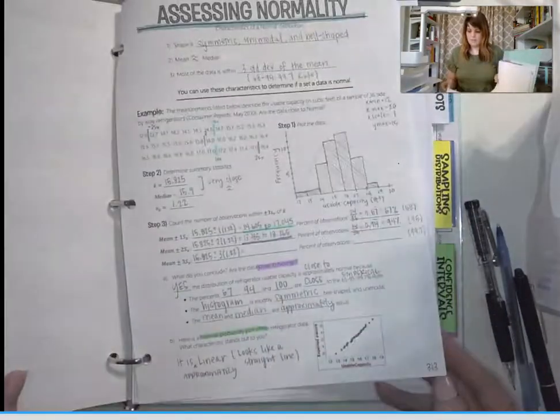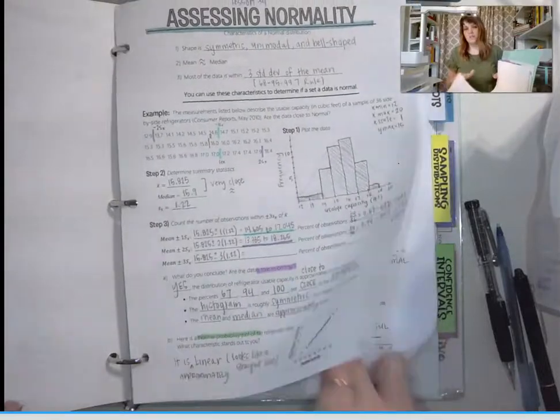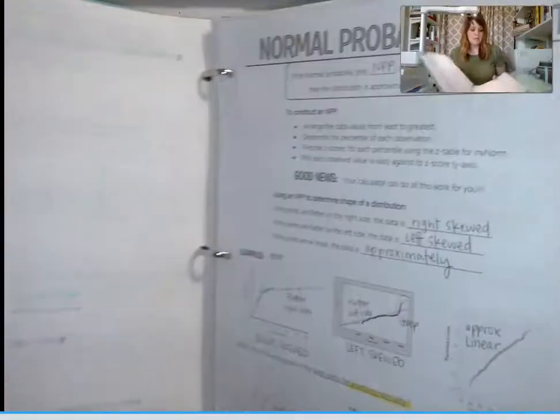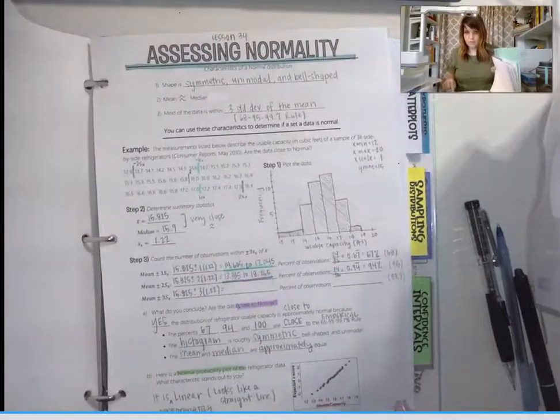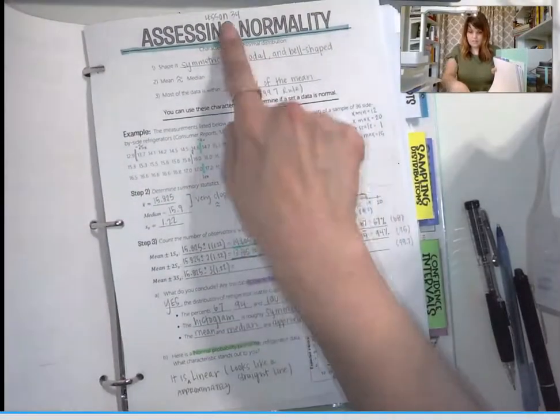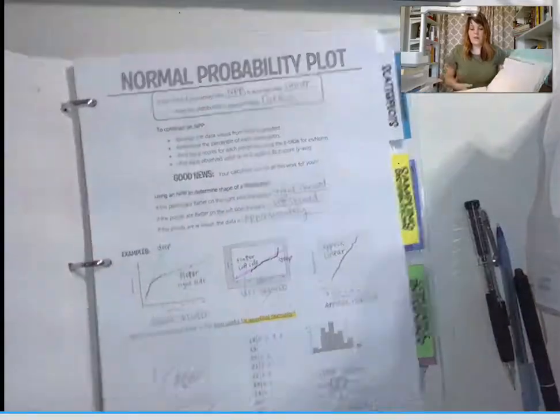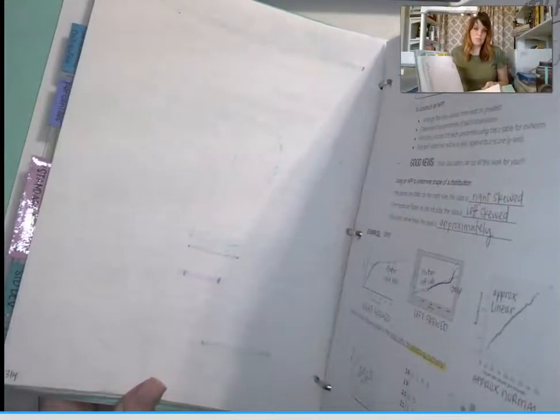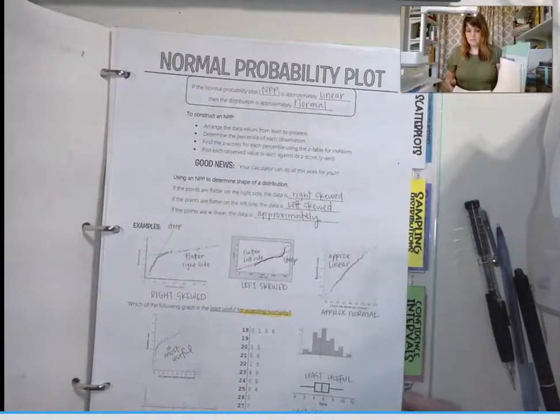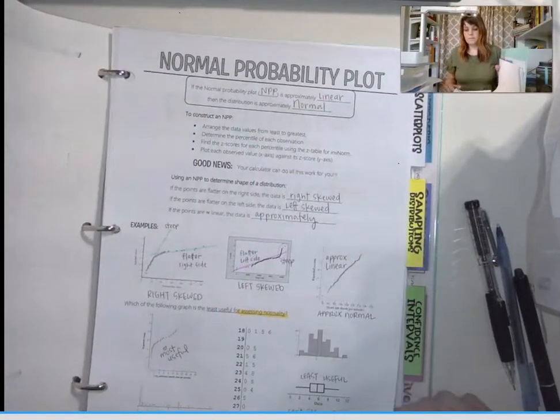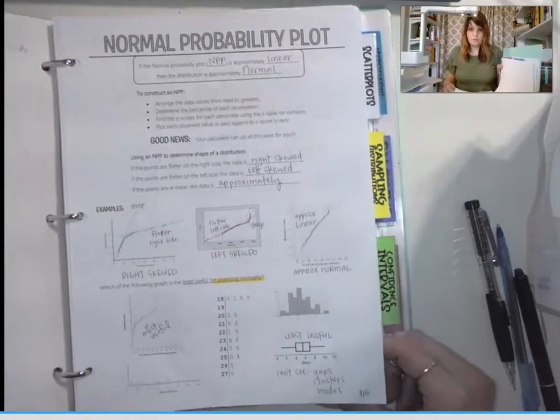And then my next page... oh, 314. Then the back side is blank. I think I said that wrong, I'm sorry. 313 is lesson 34, then the back side is blank. That's 314. Then 315 says normal probability plot, and that's all of Unit 3.